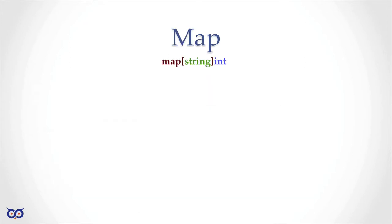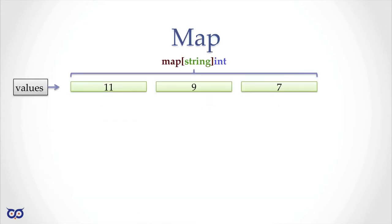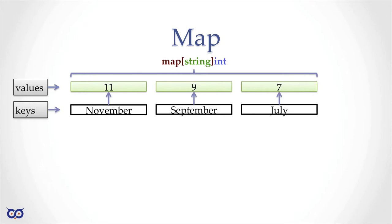Maps give us a few flexibilities. Values in a map, like an array and a slice, must all be of the same type. But when it comes to indexing, we can use negative numbers if our key type is an integer, or we can use a string, boolean, floats, and more. We cannot use a map, a function value, or a channel as a key, but many other types work.